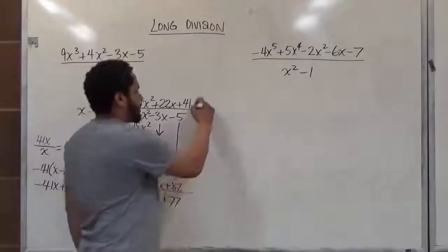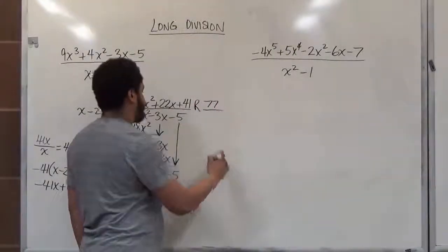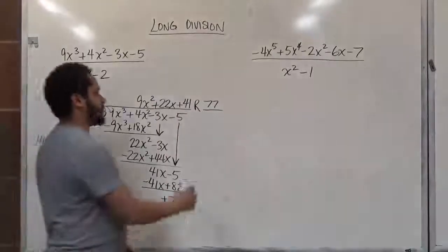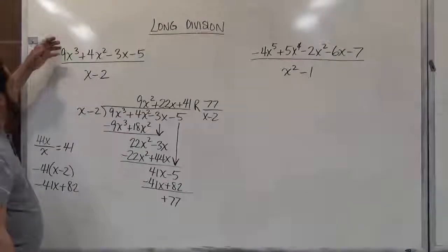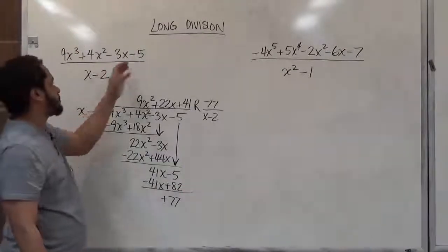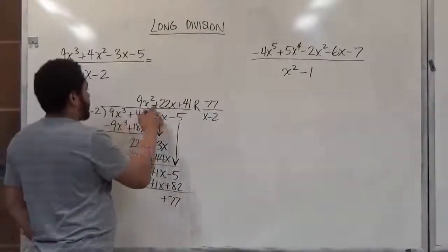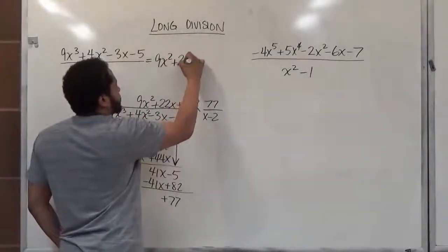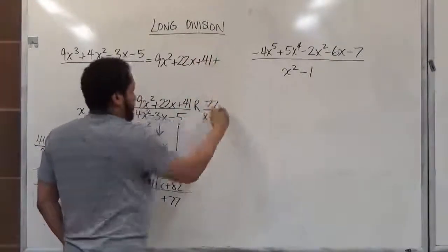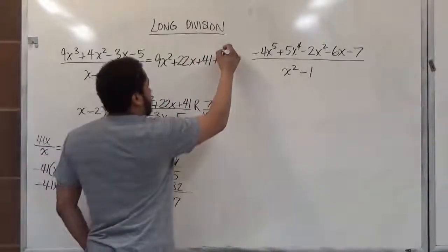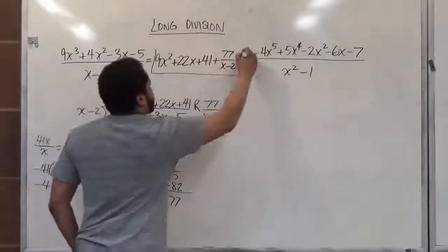This is our remainder. We put the positive 77 over the divisor, so it's 77 over x minus 2. So when we divide 9x cubed plus 4x squared minus 3x minus 5 by x minus 2, we get 9x squared plus 22x plus 41 plus 77 over x minus 2. That's the result for the first problem.